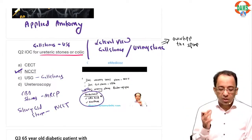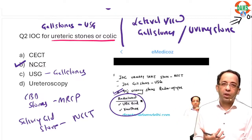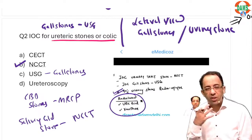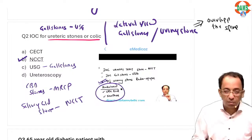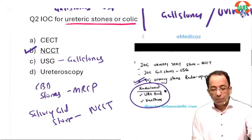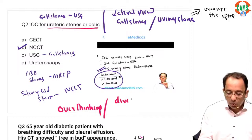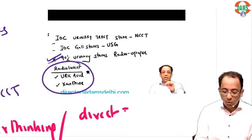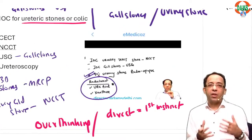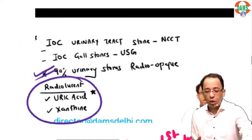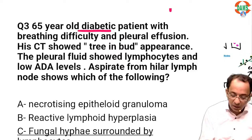Why would you start with ureteroscopy for every case? That's a mistake many people made in the exam. Ureteroscopy will not be the investigation of choice here — that comes when you are planning therapy, after you have seen it on a CT. The answer is NCCT — it is a clear direct question from the classes. Many people made the mistake of overthinking. My request: if it is a direct question from the class, go with your first instinct.